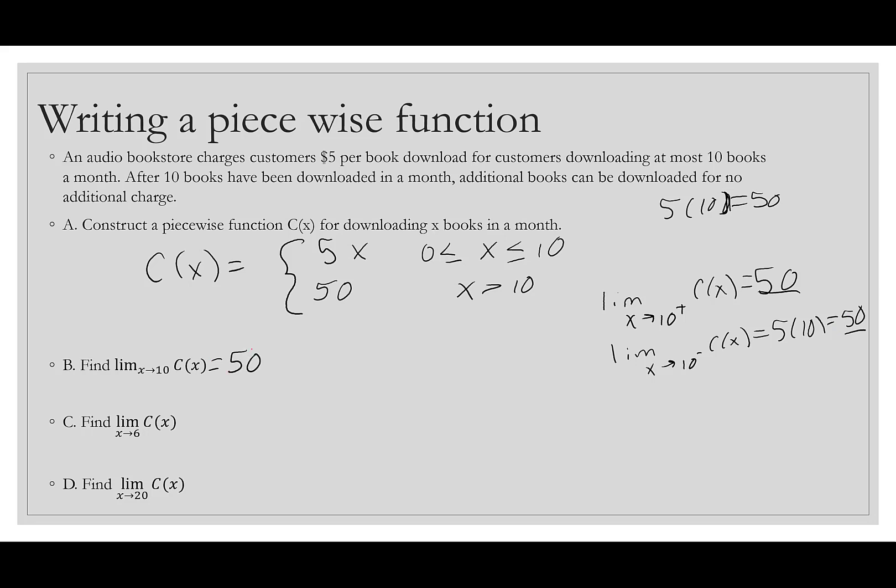The limit as x goes to 6 of C(x) - well, 6 is between 0 and 10, so that would be 5 times 6, which is 30. And then finally, when x goes to 20, 20 is bigger than 10, so we have this $50. So that finishes up our look at limits. Next, we'll start looking at continuity as we head towards the derivative.